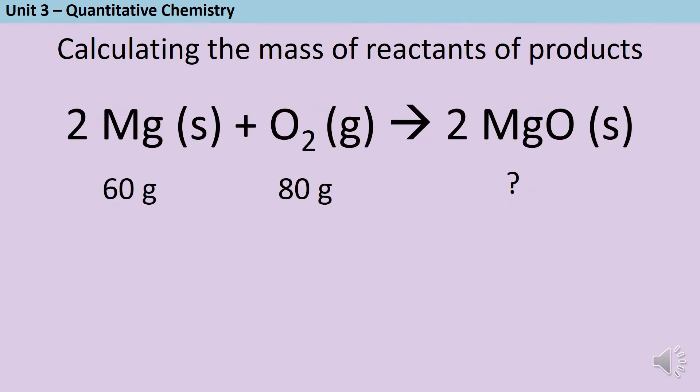Here's another example of a slightly different type. 60 grams of magnesium are burned in 80 grams of oxygen. How much magnesium oxide is made? So all I need to do is remember that the mass of the reactants is going to be the same as the mass of the products. And so if I add together 60 and 80 grams, I can see that I have a total mass of reactants of 140 grams, and therefore my total mass of products must also be 140 grams.